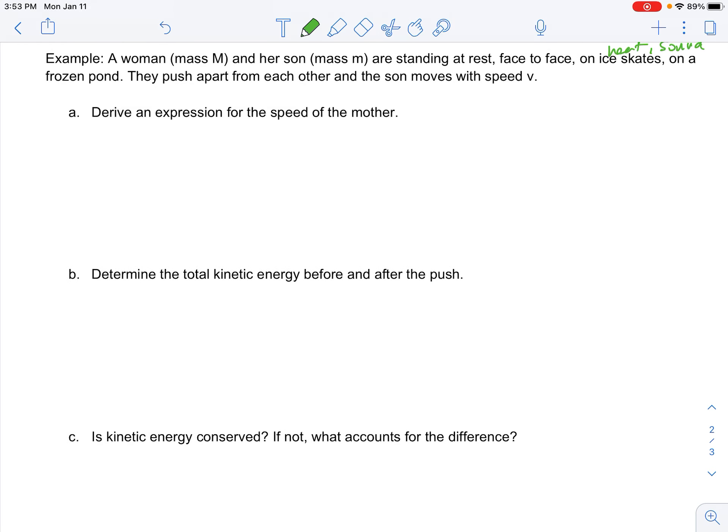Okay, let's do an example. A woman, mass M, and her son, mass little m, are standing at rest face to face on ice skates on a frozen pond. They push apart from each other and the son moves with speed V. Derive an expression for the speed of the mother. So when we do a problem like this, we're going to derive our expression in terms of what's already been given. So here's the mom, here's the son. He's going to go this way and she's going to go that way.